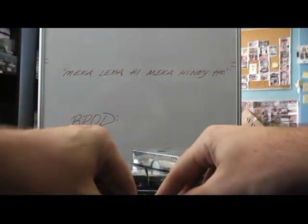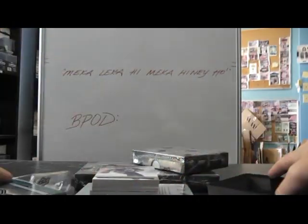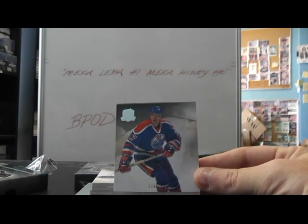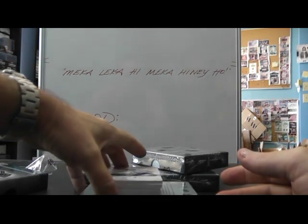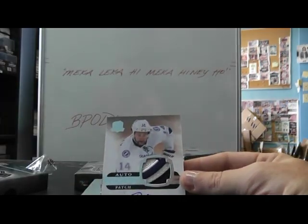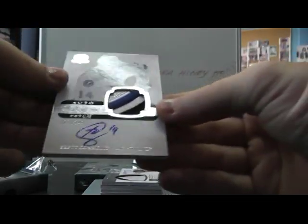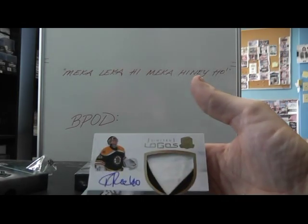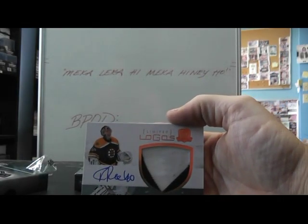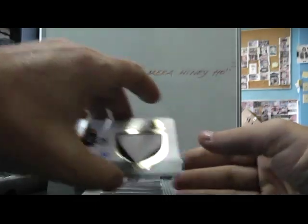Next up: Yari Curry, 249, for the Oilers — base. Then we have Brett Connolly, Lightning — cool looking chunk on that patch. Then we have a limited logos patch — that one's Tuka Rask for the Bruins, numbered to 50. A chunk of patch on that one.